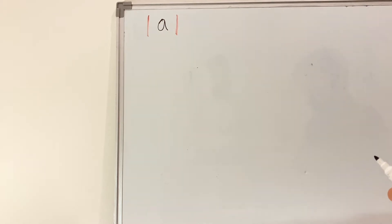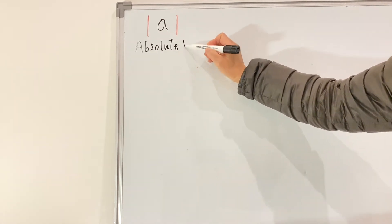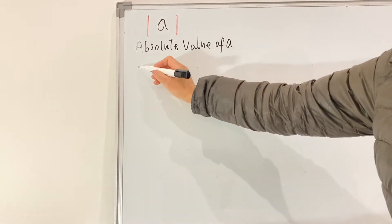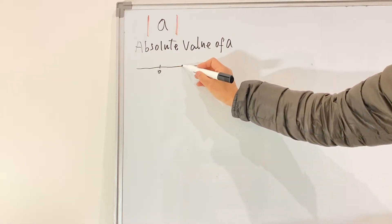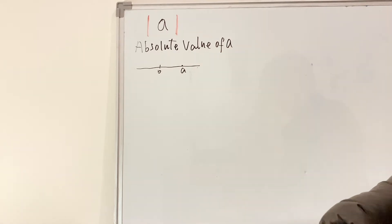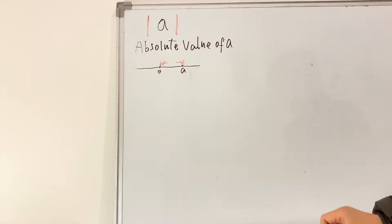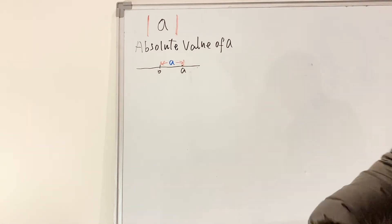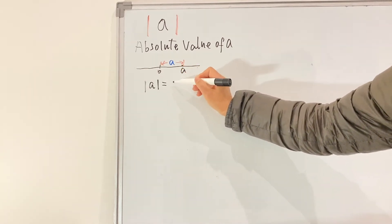If a represents a number, then this symbol is called the absolute value of a. What is the real meaning of absolute value of a? It means a number on the number line — how far away from the origin, the distance to the origin. We know that distance is a, so the absolute value of a should be equal to a.